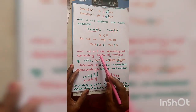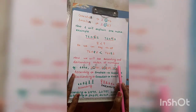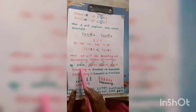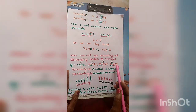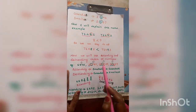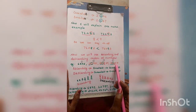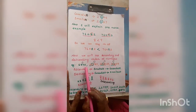Now we will see ascending and descending order of numbers. In ascending and descending order, how can we arrange the numbers? I will show you an example.